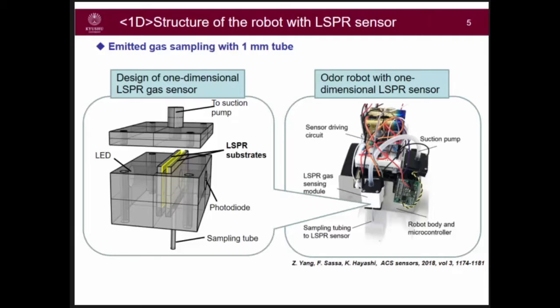Here is the 1D part of the sensor design and the robot: a vacuum pump and a sampling tube for gas flow, and an LED light source and a photodiode for detecting the change of optical properties. Here is the sensor film. I will play a video to show what this robot can do, to give a simple impression.